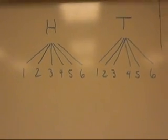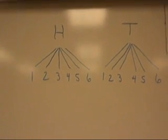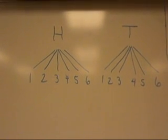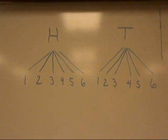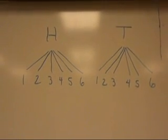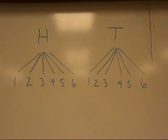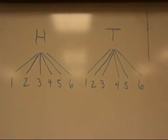That means that there are 12 total possible outcomes. Heads with a 1, 2, 3, 4, 5, or 6, and tails with a 1, 2, 3, 4, 5, or 6.